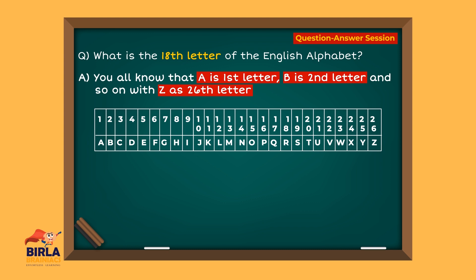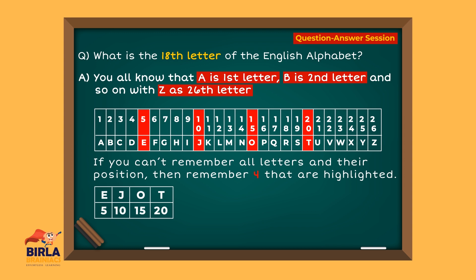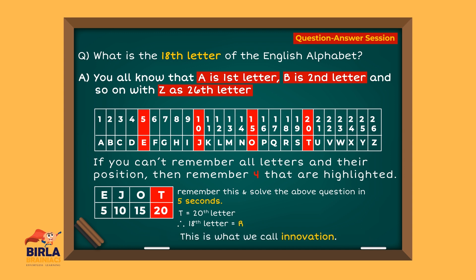Let's look at how we can achieve accuracy along with speed. Have a look at the chart. If you can't remember all the letters and their positions, then remember at least the four that are highlighted. If you remember this, you can solve the above question in 5 seconds. If T is the 20th letter, then the 18th letter will be R. This is what we call innovation.